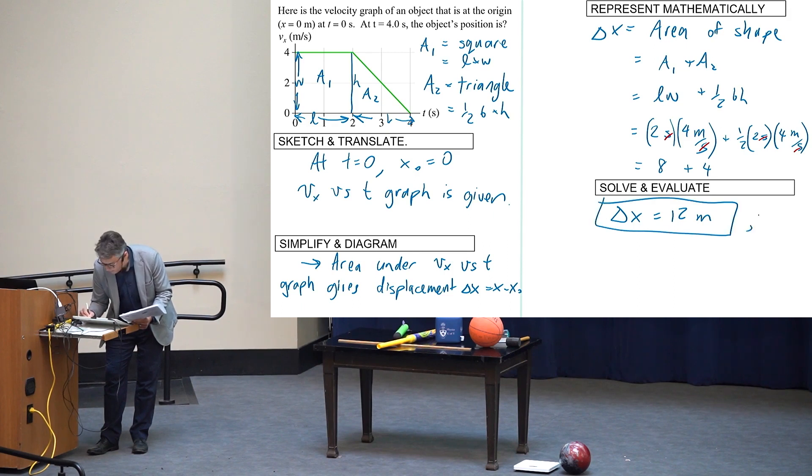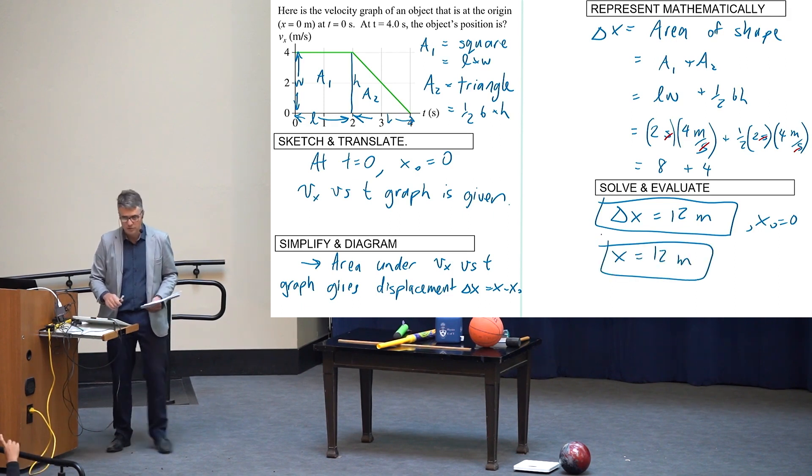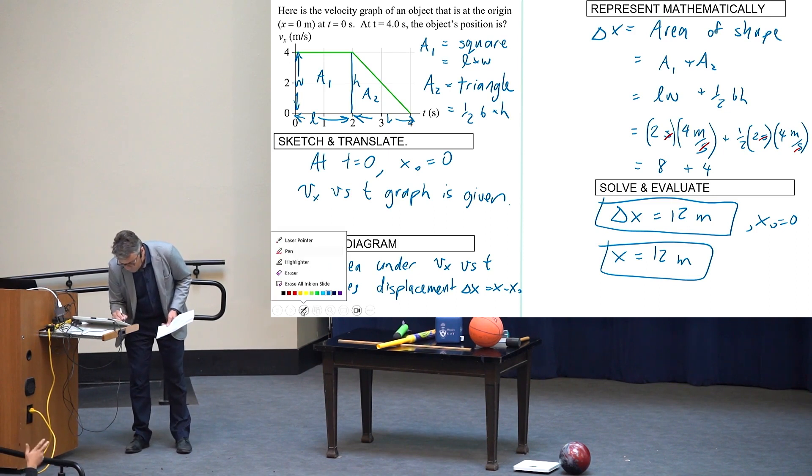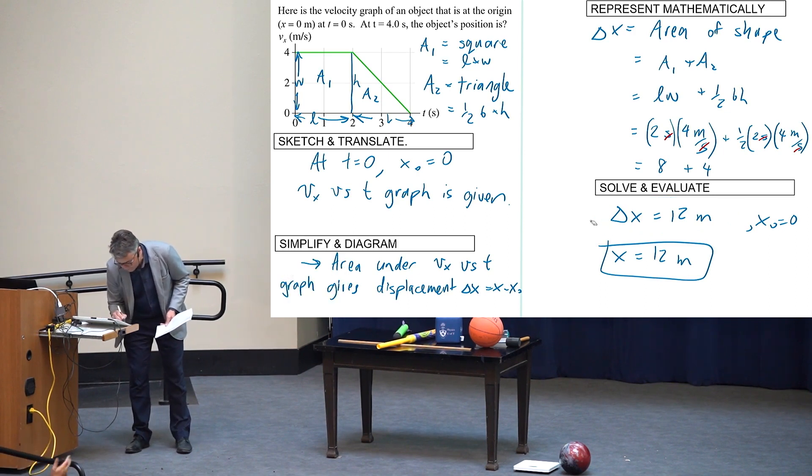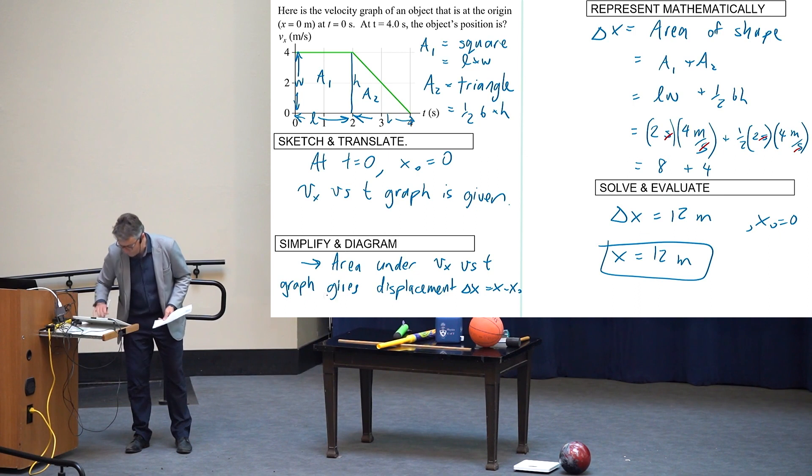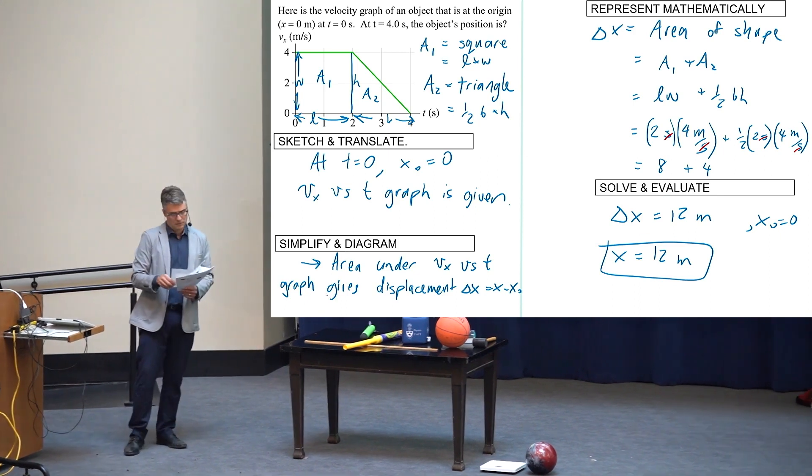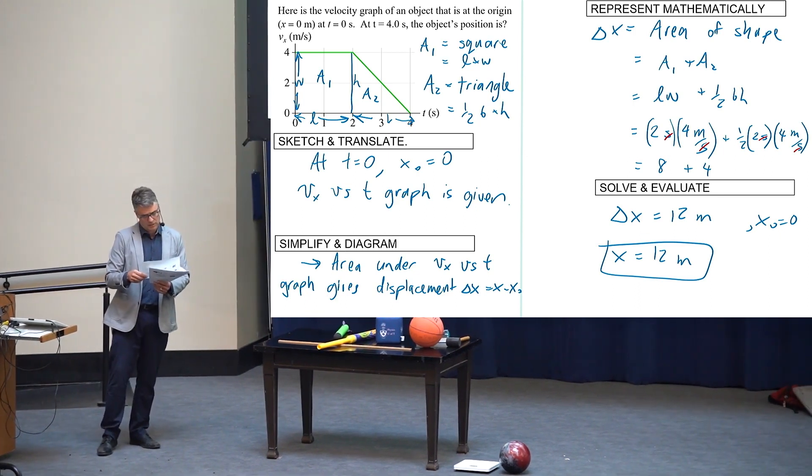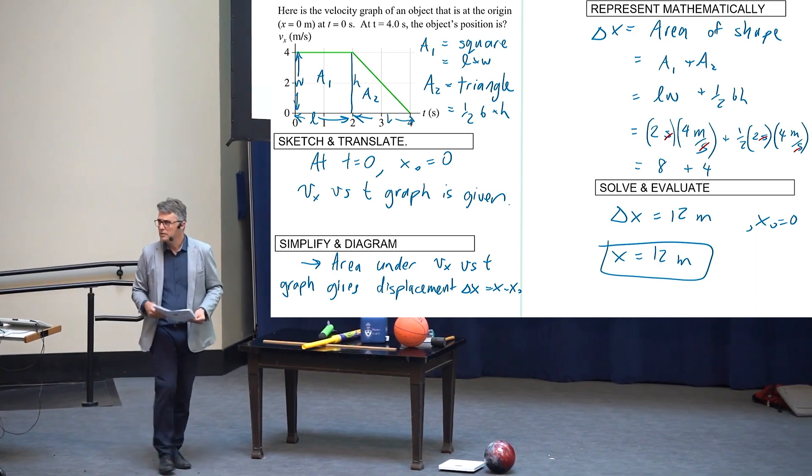We have to cancel these seconds, which is good because we're trying to find a distance. So we've got 2 times 4 equals 8, plus 2 times 4 is 8 divided by 2 is 4, so the answer is 12. Delta X is 12 meters.